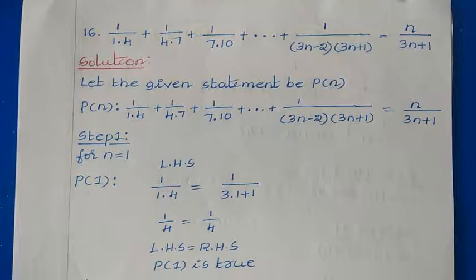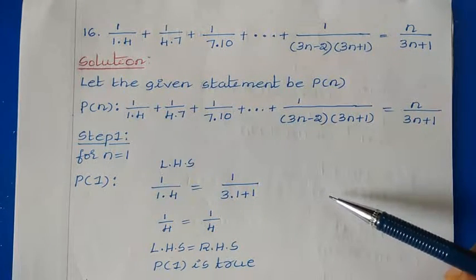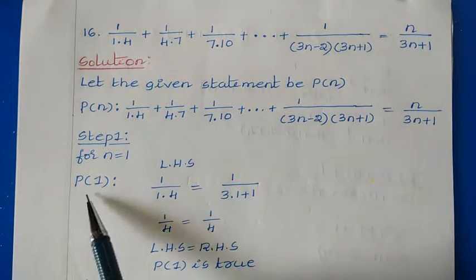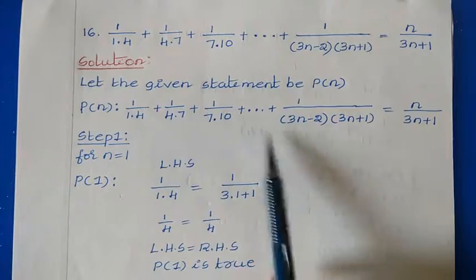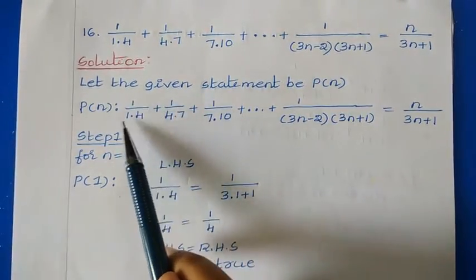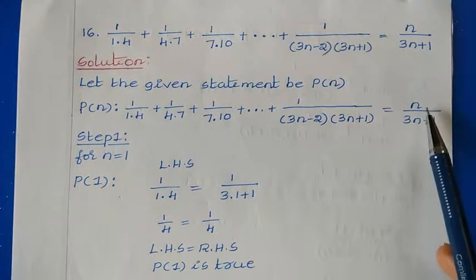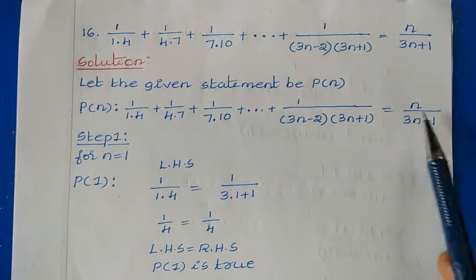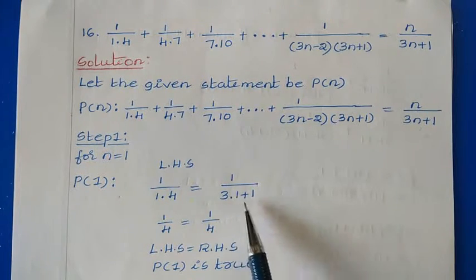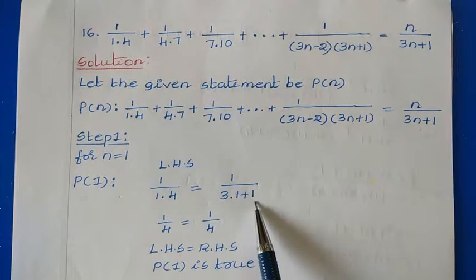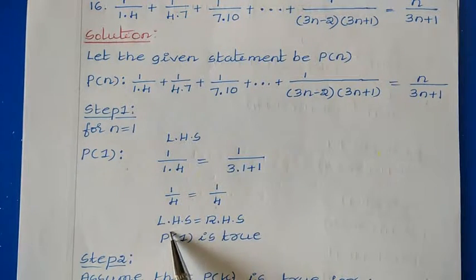Let us say that the given statement is P(n). The first step is to check the given statement for n = 1, that is P(1). From the left hand side, I am taking the first term of the statement, which is 1/(1×4). From the right hand side, I will consider the entire term n/(3n+1), and replace n with 1.